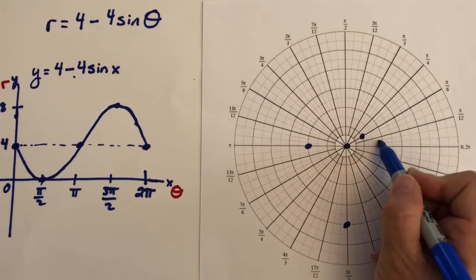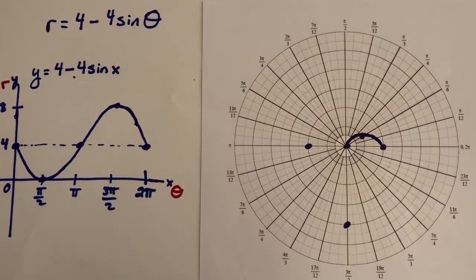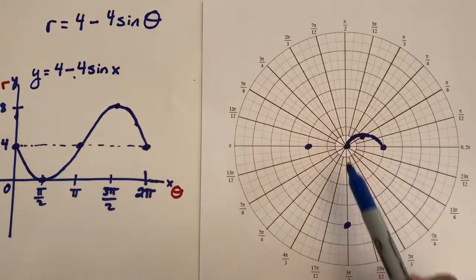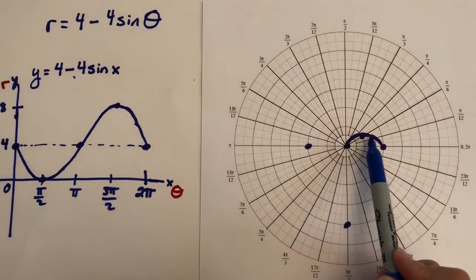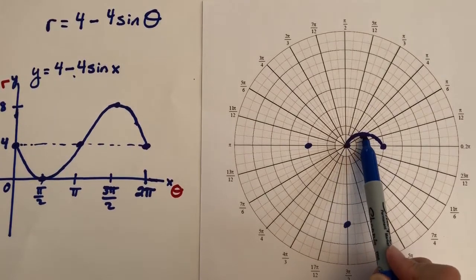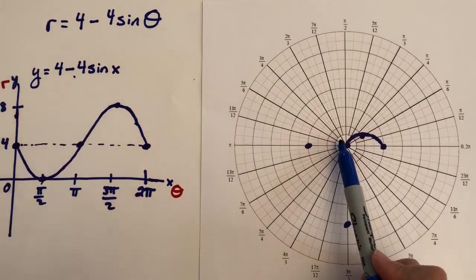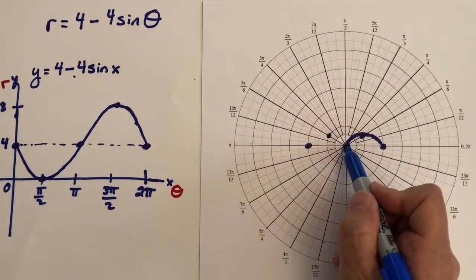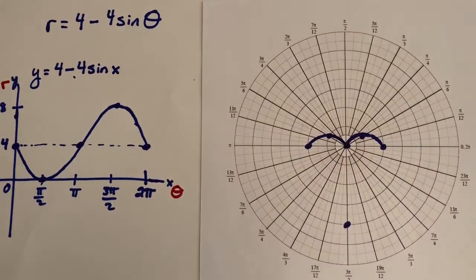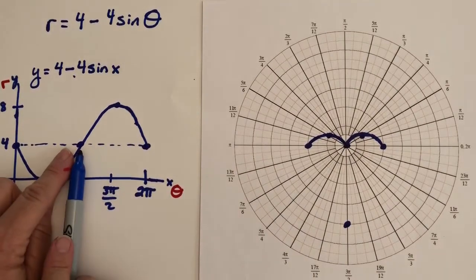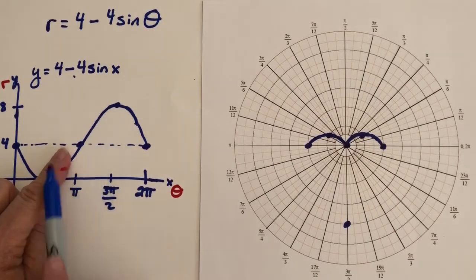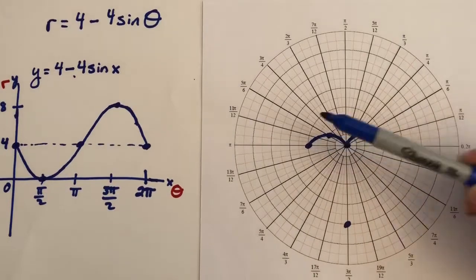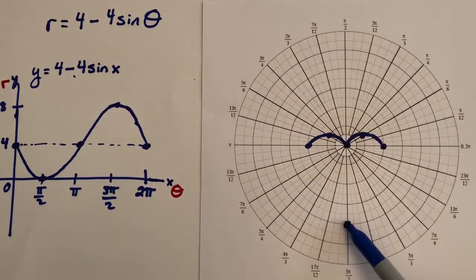From π over 2 to π, the r value is still positive. At 5π over 6, the sine value is the same as sine of π over 6, so we'd have r = 2. Then from π to 3π over 2, the r values are getting bigger and bigger — always positive for this picture. There are no negative values here, and r grows until it hits 8 at 3π over 2.